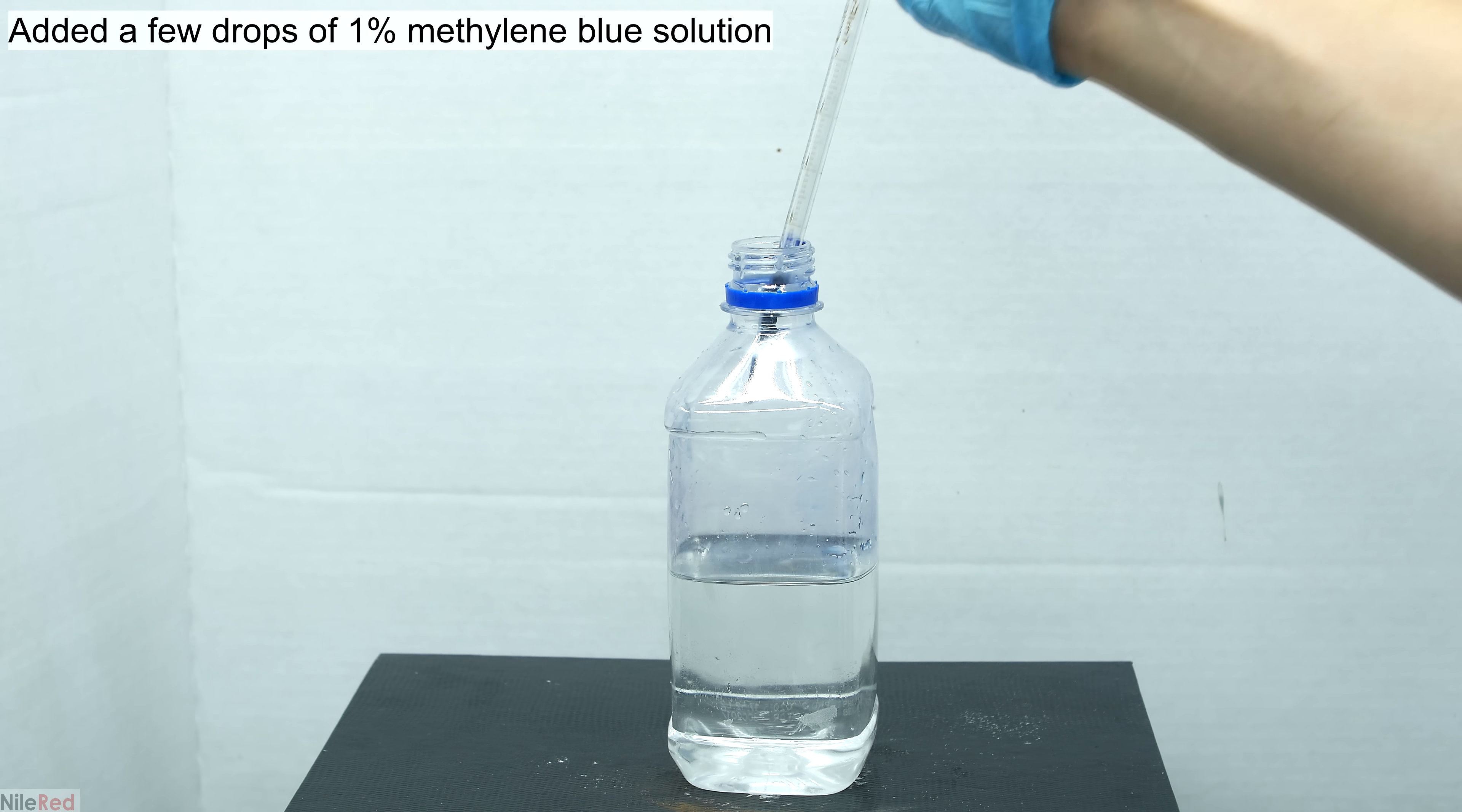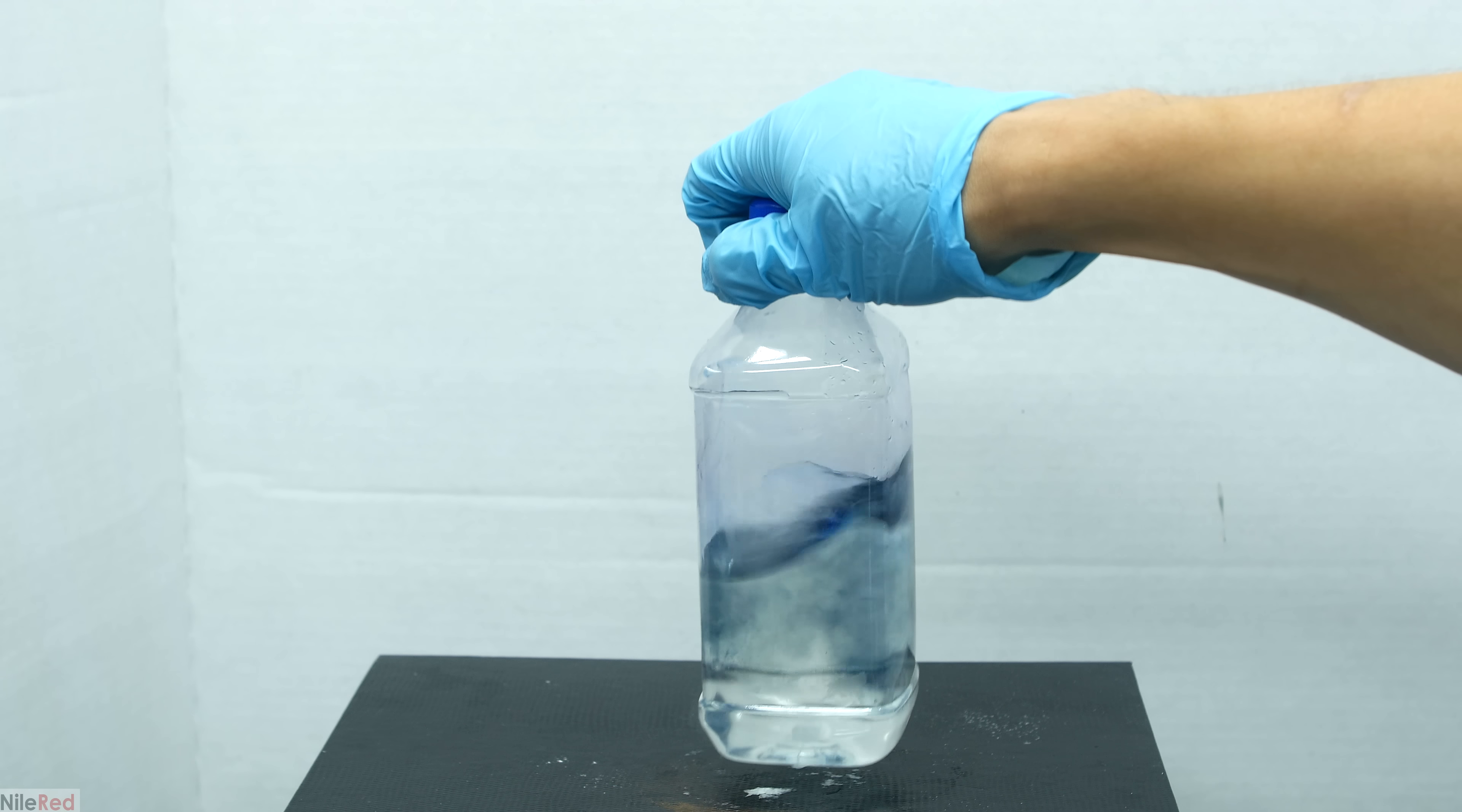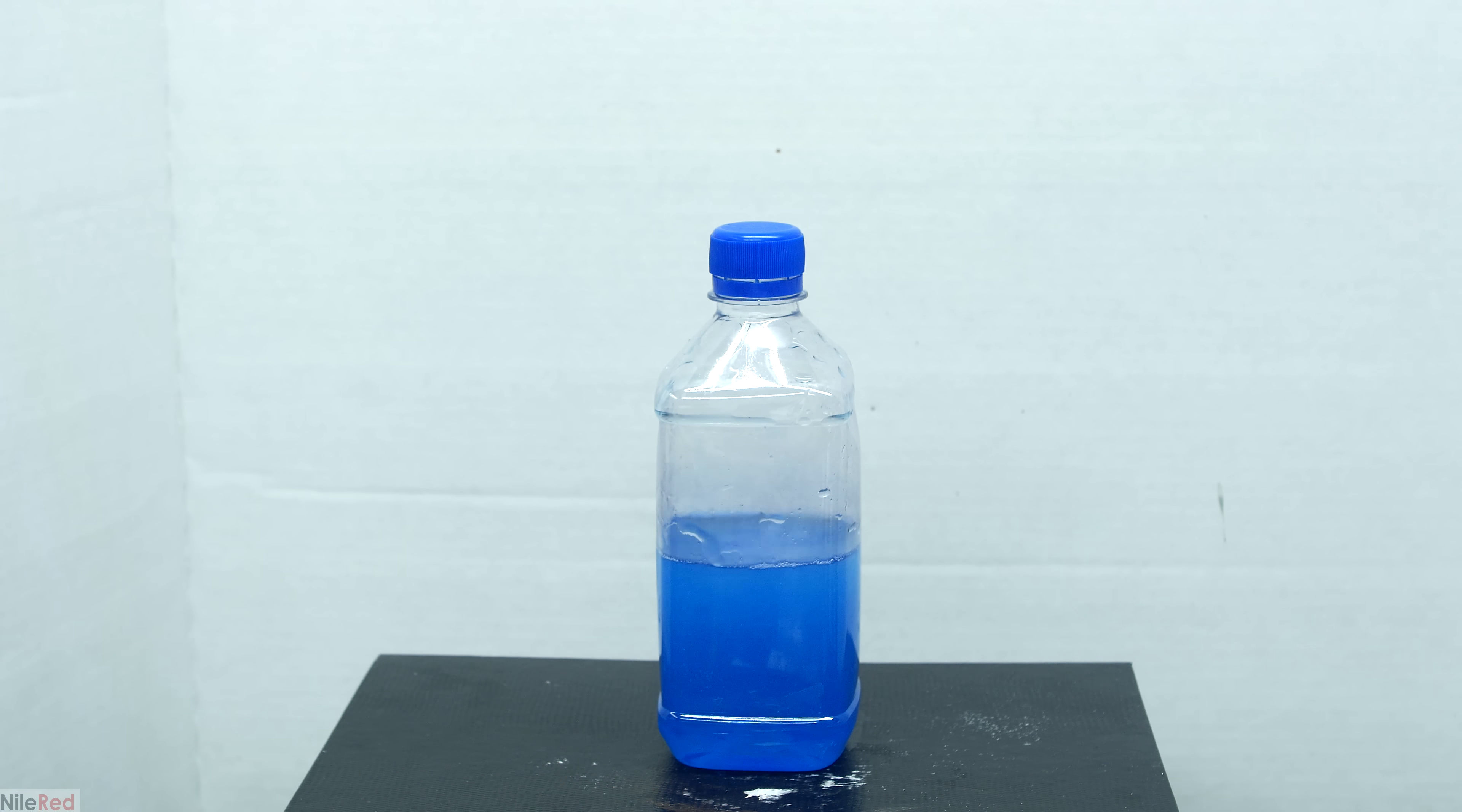The last thing that we need to do now is add a few drops of 1% methylene blue solution. I cap the bottle but before shaking it I swirl it a little and you can see the methylene blue disappear. However, when I go ahead and shake the bottle the blue color comes back.